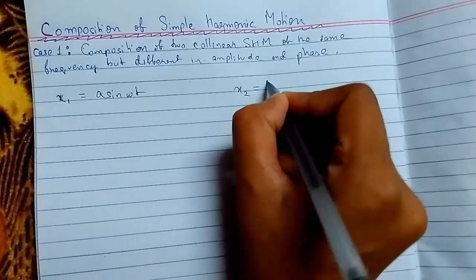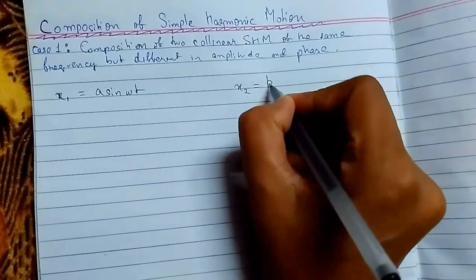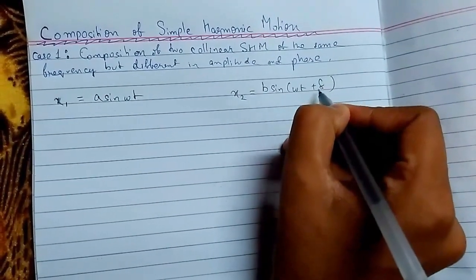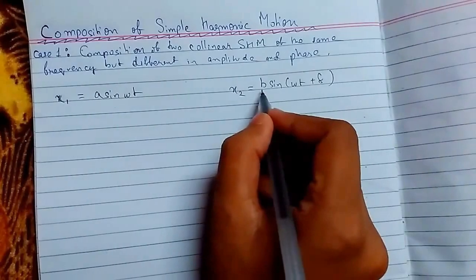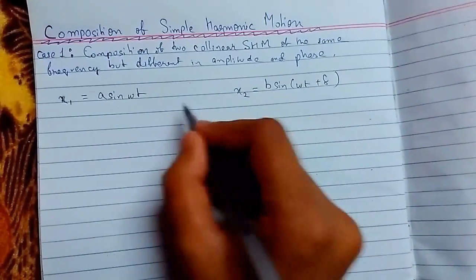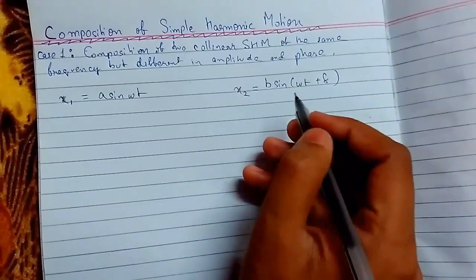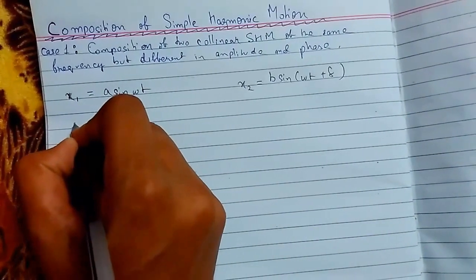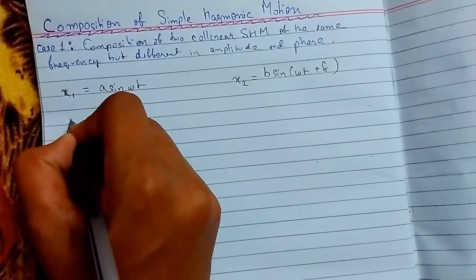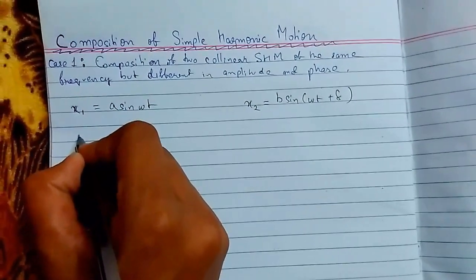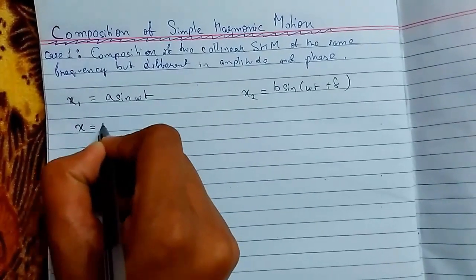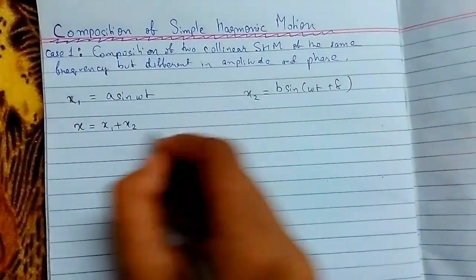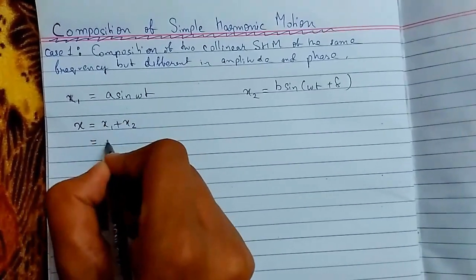Our second equation will be x₂ equals b sine(ωt + δ), where δ is the phase difference and b is the amplitude. From the principle of superposition, the resultant displacement x equals x₁ plus x₂.